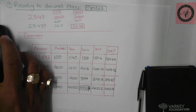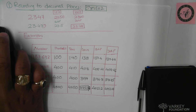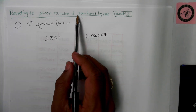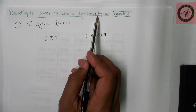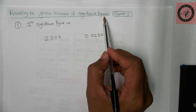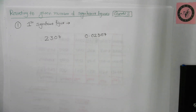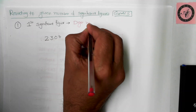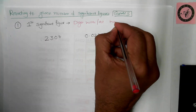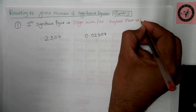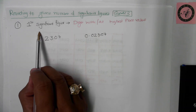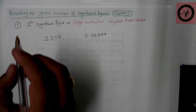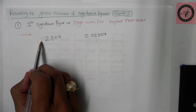Now we move on to rounding to various significant figures — really important to understand. Rounding to significant figures is not different from the normal rounding you've already learned. The first significant figure is the digit at the highest place value. As you move towards the left of a number, the place value increases before the decimal. To find it, start from the left and the first digit you encounter is the first significant digit.